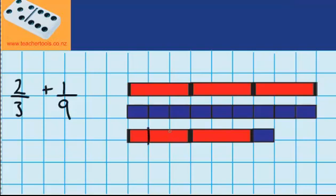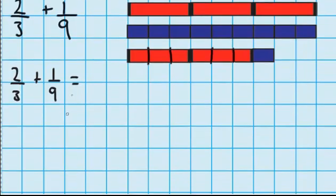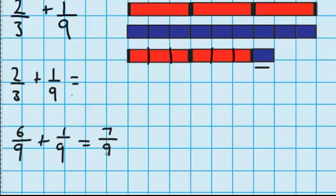And we can check that by splitting our thirds up. And now you can see the seven ninths. Now let's just see how we record that. We had two thirds plus one ninth. To start with we couldn't answer this question because these fractions had different denominators. So what we did is we pulled our two thirds down here and we changed our two thirds into ninths. And two thirds became six ninths. Then I was able to add this one ninth. And because the denominators are now the same, it was easy — six ninths plus one ninth is seven ninths.